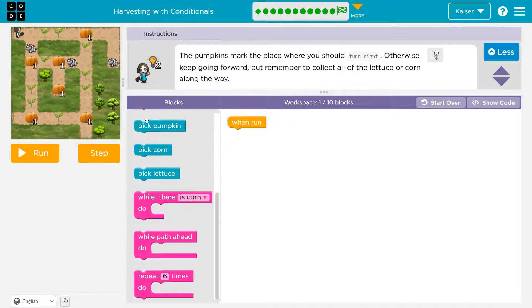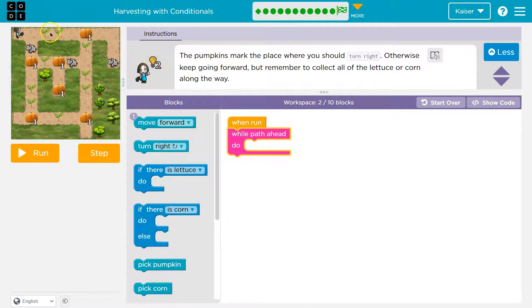Which tells me I need a heck of a lot of repeats. Oh, what's this? There's some stuff we haven't used a lot. Let's see. That's one, two, three, four, five away. Wall path ahead. If the pumpkins tell us where to turn, well, then as long as there is a pumpkin, I should probably keep going. While there is... Oh, no, because we have to grab them.